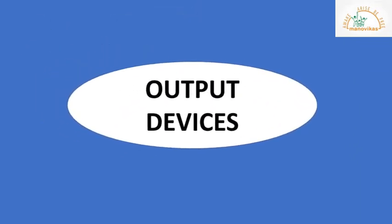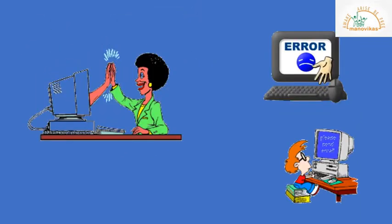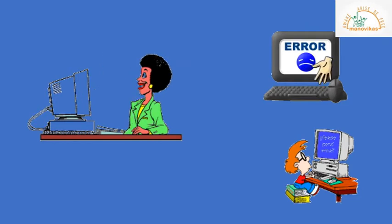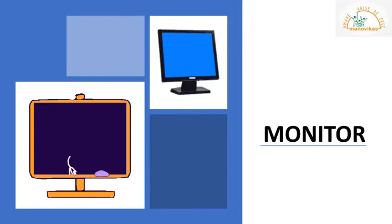Output devices. An output device is any device that receives data from a computer, usually for display to the user. A computer monitor is an output device which displays information in pictorial form.